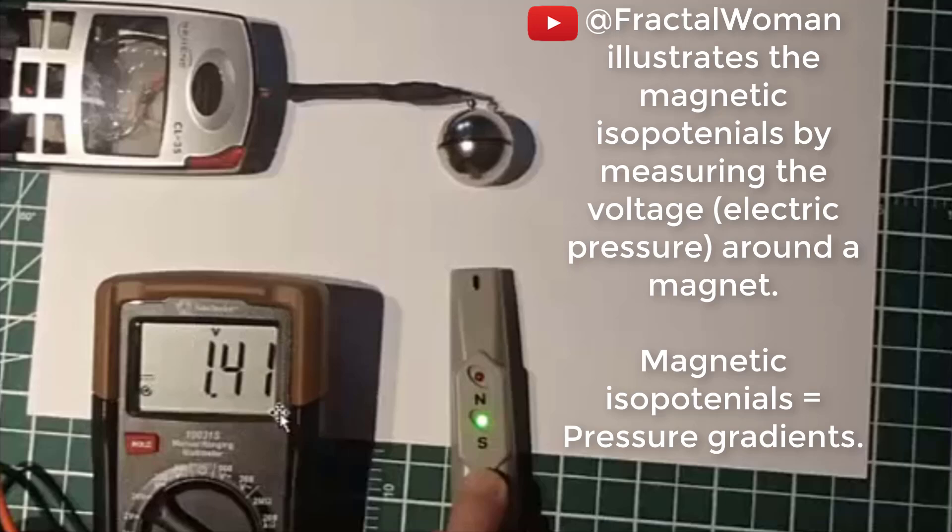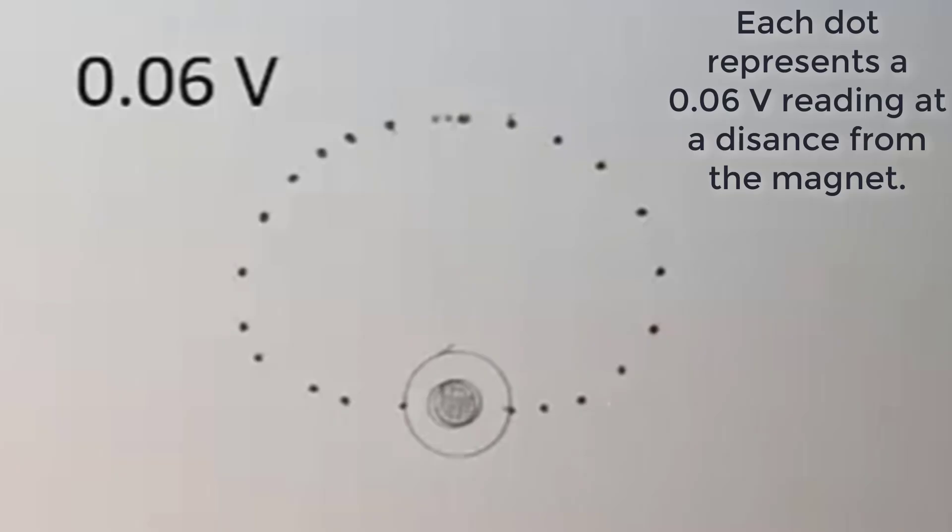Magnetic isopotentials can be thought of as pressure gradients. Each dot represents a 0.06 volt reading at a distance from the magnet.